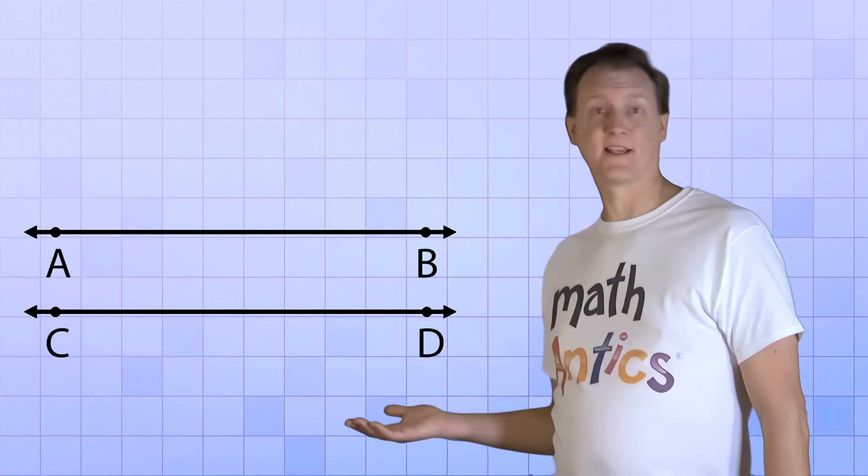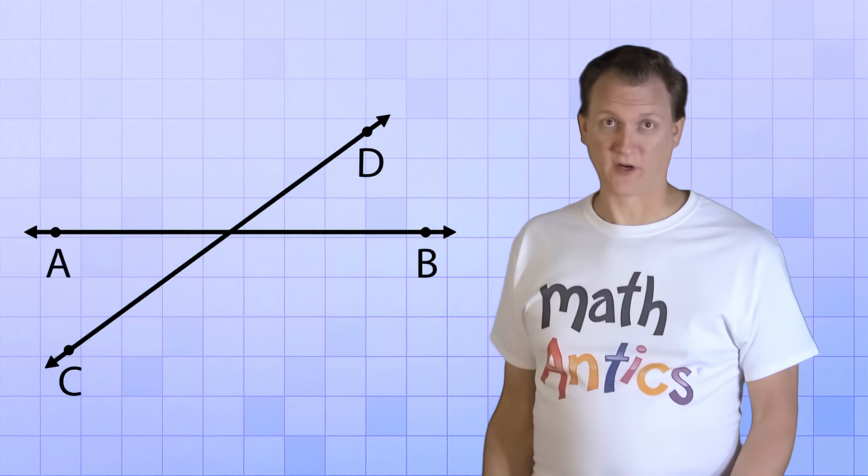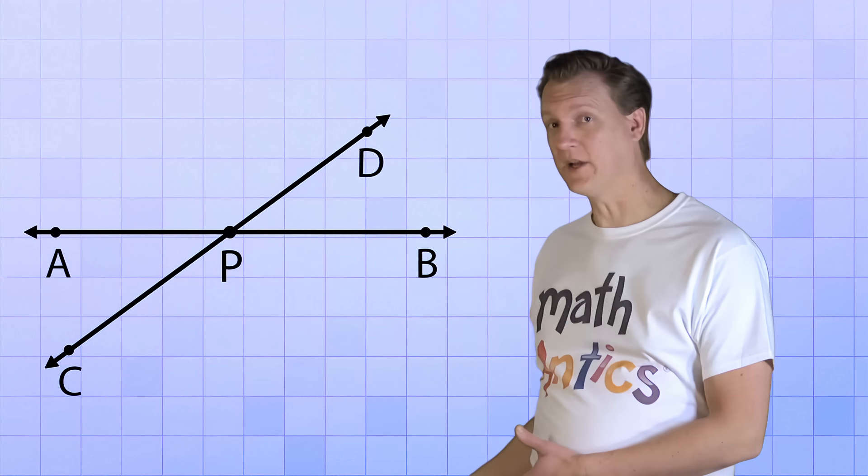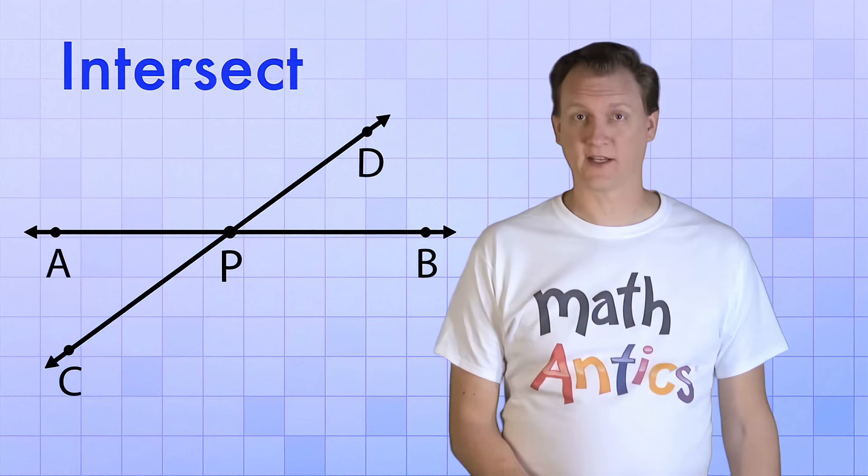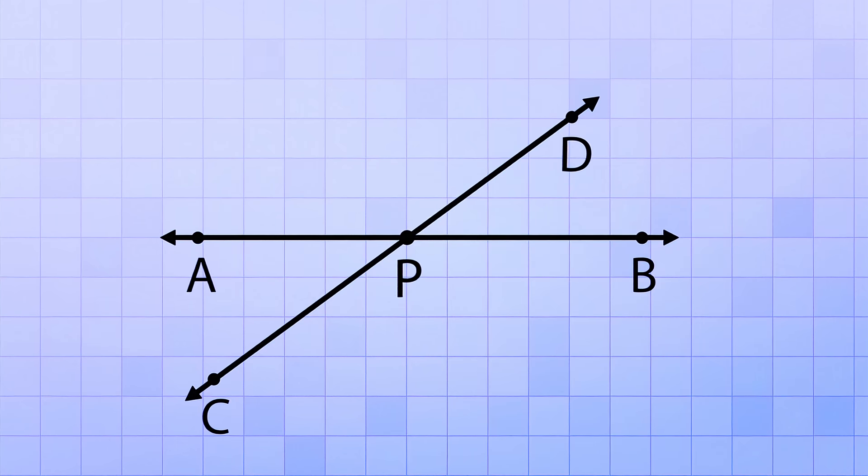But what if I take one of our lines and give it a little nudge? Now the lines aren't parallel anymore. In fact, they cross at this point right here. Let's name it Point P. When lines cross at a point like this, we say that they intersect and we call the point an intersection. And when lines intersect, they form angles.